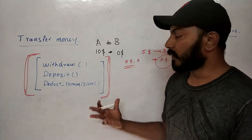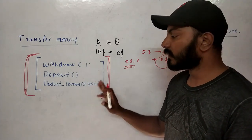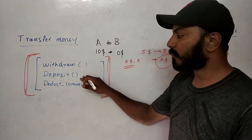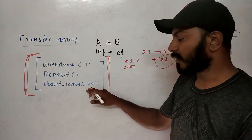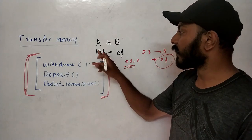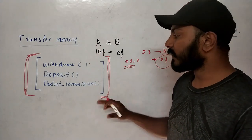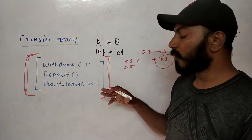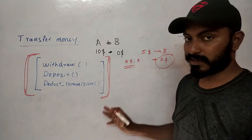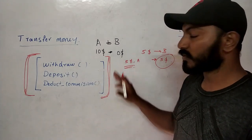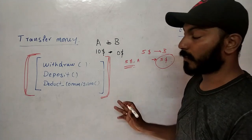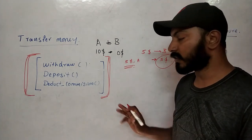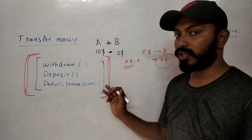If everything works fine, $5 is deducted from A, $5 is deposited to B, and commission is deducted from A. The database knows all operations were performed successfully and commits. All numbers are reflected properly. If there are errors, it rolls back; if everything succeeds, it commits. Now let's talk about one more scenario — concurrency.